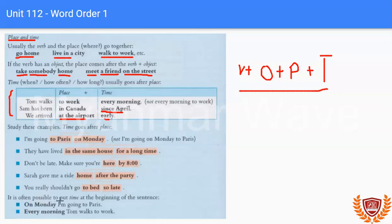It's often possible to put time at the beginning of the sentence. Time goes after place. On Monday, I'm going to Paris. Every morning, Tom walks to work.